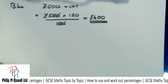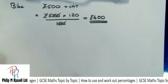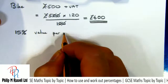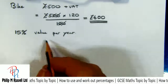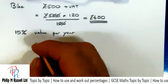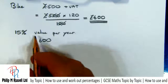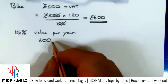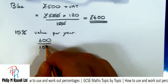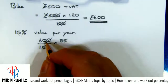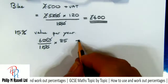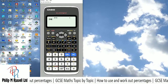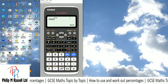Now this bike loses 15% of its value per year. Losing 15% means it's now worth 85% of its value. So: 600 × 85 ÷ 100. Cancelling: 6 × 85 on the calculator gives £510 after the first year.